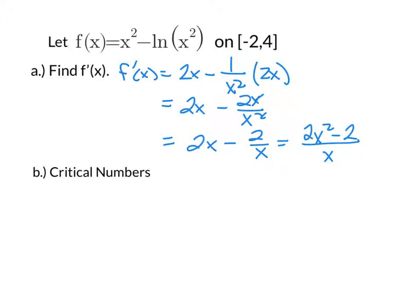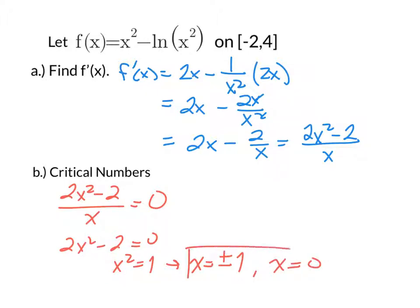In the next part, we're asked to identify the critical numbers. And critical numbers happen when the derivative is equal to 0 or undefined. So my derivative I just found out to be 2x squared minus 2 all over x. If this is going to equal 0, then that means the numerator is equal to 0. So 2x squared minus 2 would equal 0. x squared would equal 1, making x equal to positive or negative 1. On the other hand, we also have to find out when the derivative could be undefined. What's going to happen when the denominator x is equal to 0, making these three our critical numbers.